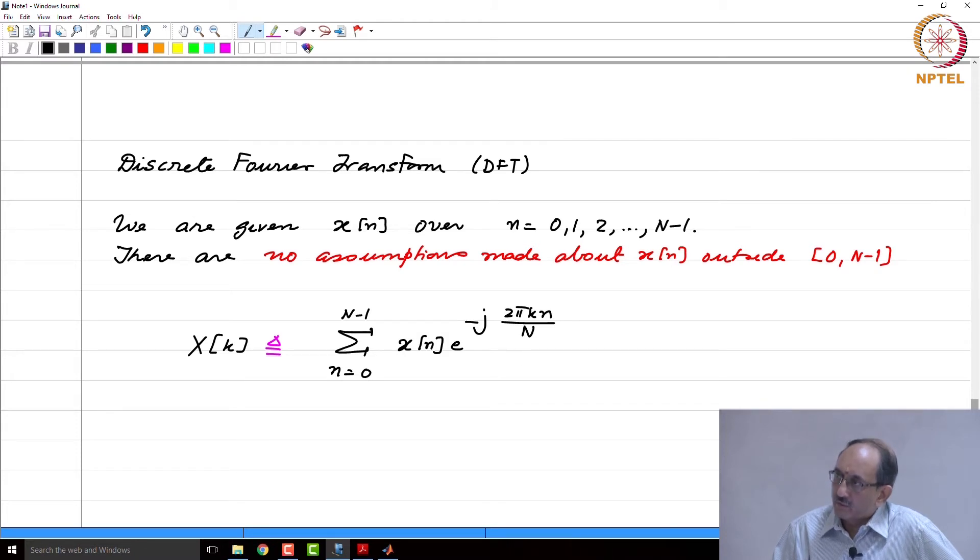And now, if you look at this, immediately you can realize X(k + N), wherever little k is there, if you replace little k by k plus cap N what happens? Here you need to replace k by k plus cap N, does anything change? No. Therefore, X(k + N) equals X(k).